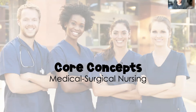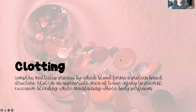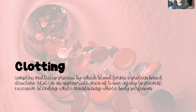Today we are going to talk about clotting. Clotting is, by definition, a complex multi-step process by which our blood forms a protein-based structure called a clot. It forms in an appropriate area of tissue injury in order to prevent excessive bleeding.